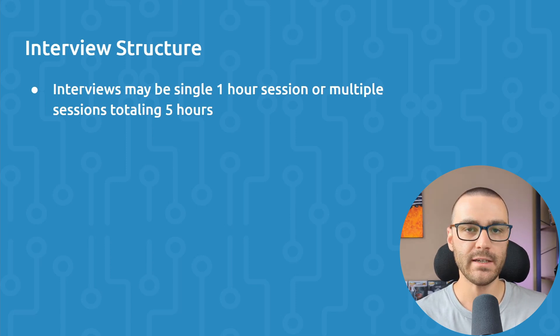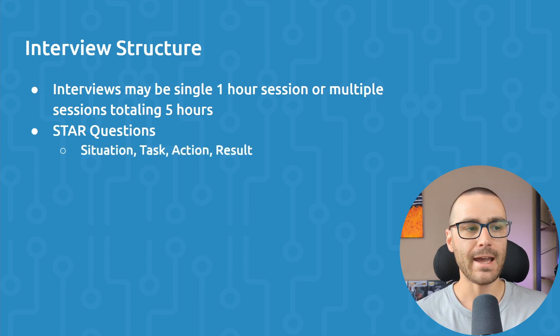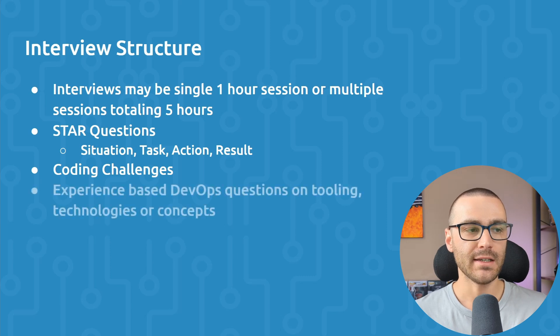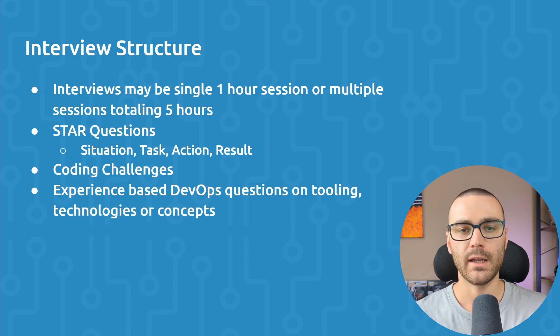The typical format of an interview will include the following three sections. The first section are STAR-based interview questions. STAR stands for Situation, Task, Action, and Result, and these are behavioral questions. The second part of the interview are coding challenges. And in the final section of the interview, they typically ask experience-based DevOps questions on tooling technologies or concepts. I want to emphasize that the order that I've laid them out here is not necessarily the order that you'll get in all of your interviews.